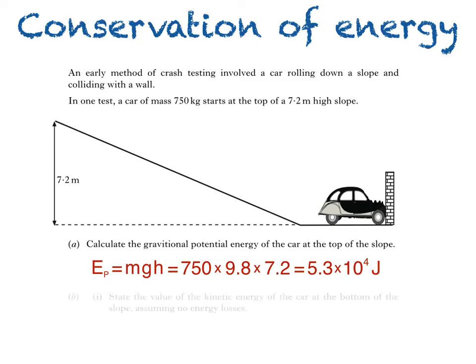B part 1 then asks us to state the value of the kinetic energy of the car at the bottom of the slope, assuming no energy losses. Notice how we're being asked to state the value of the kinetic energy, rather than calculate it. The reason is that we already know the answer, so there's no further calculation required.